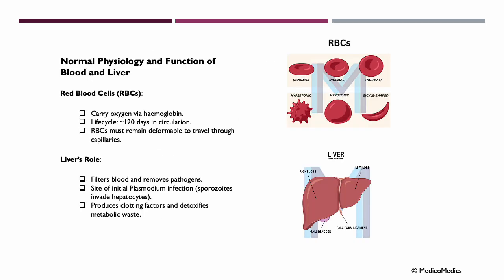To deepen our understanding of malaria, it is important to examine how the plasmodium parasites affect key organs and structures, particularly how they affect our red blood cells and the liver. Our red blood cells carry oxygen via hemoglobin, and they have an estimated life cycle of around 120 days in circulation. It is also important that RBCs remain deformable and flexible to be able to travel through capillaries. We also have the liver, mainly filtering blood and removing pathogens, but also producing clotting factors and detoxifying metabolic waste.